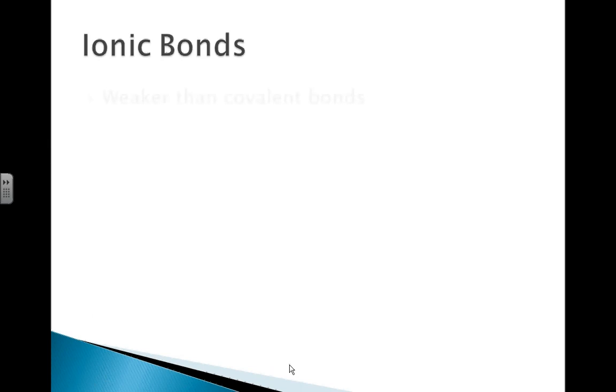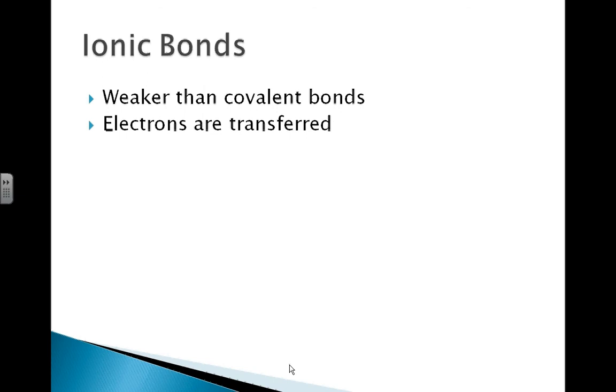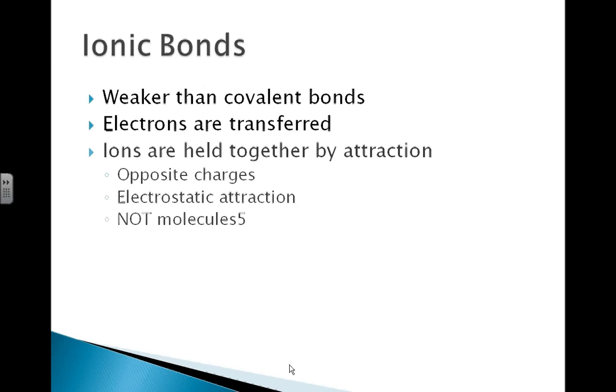Ionic bonds, on the other hand, are much weaker than covalent bonds. And they are created when electrons are transferred. Ions are held together simply by attraction. They are opposite charges. And it's called an electrostatic attraction. It is not forming molecules. Molecules are only formed by covalent bonds. Please ignore that typo. So ions are held together by electrostatic attraction. Opposite charges attracted to one another.